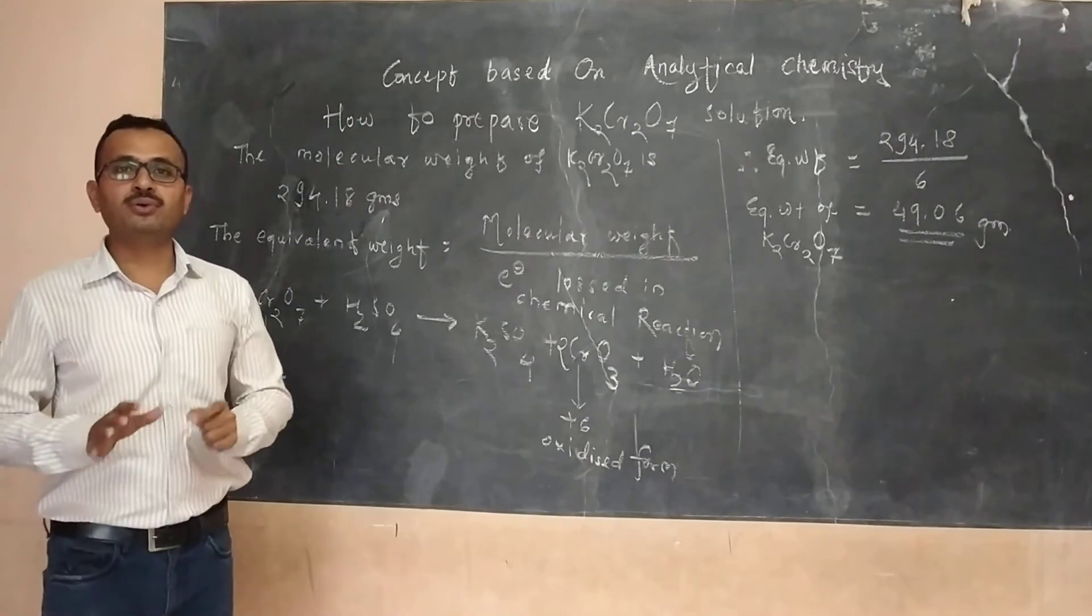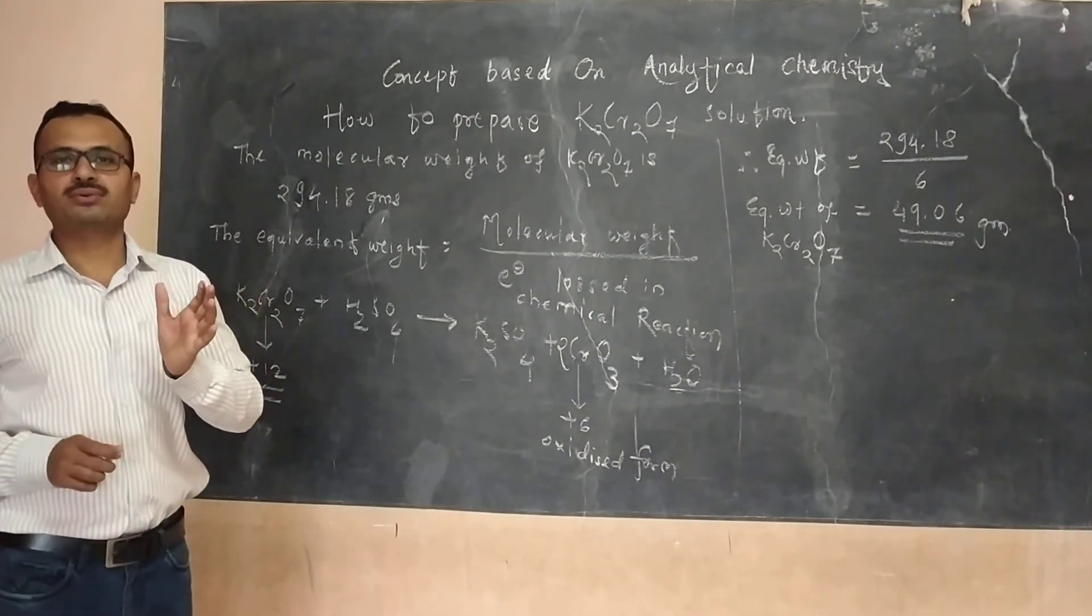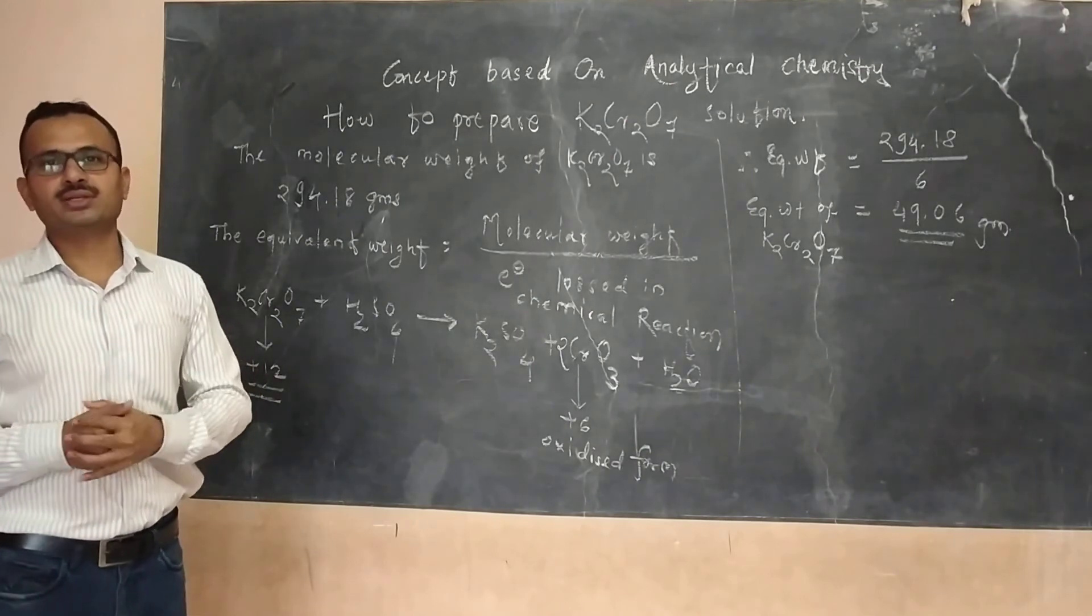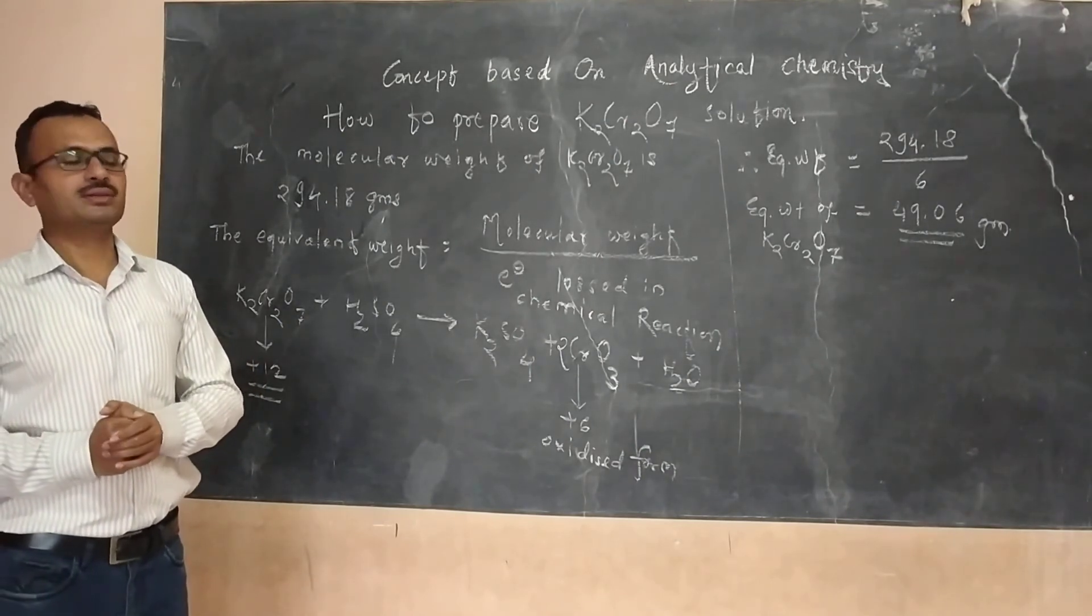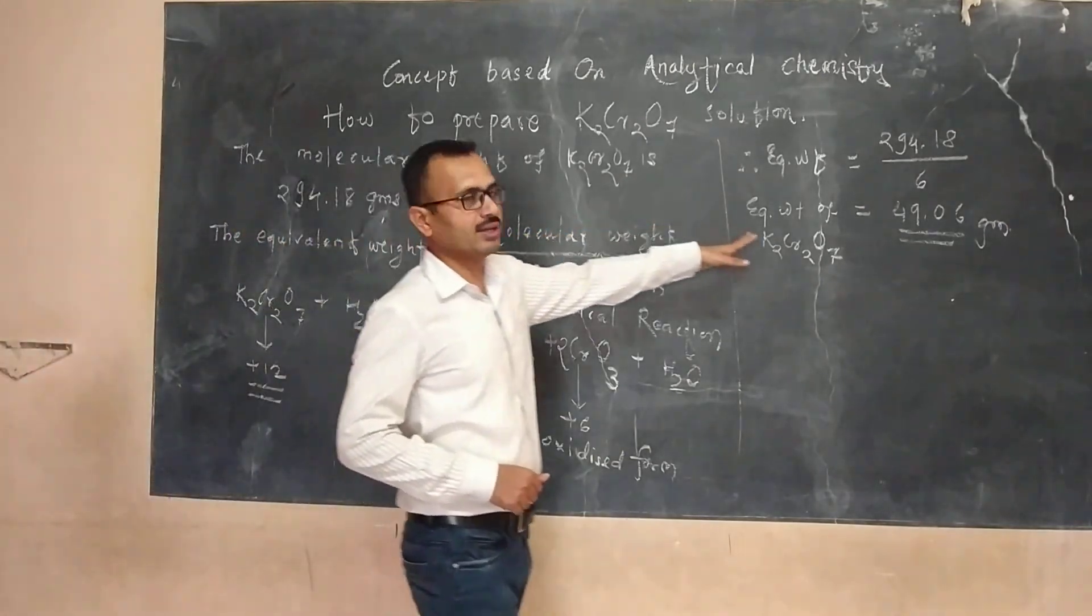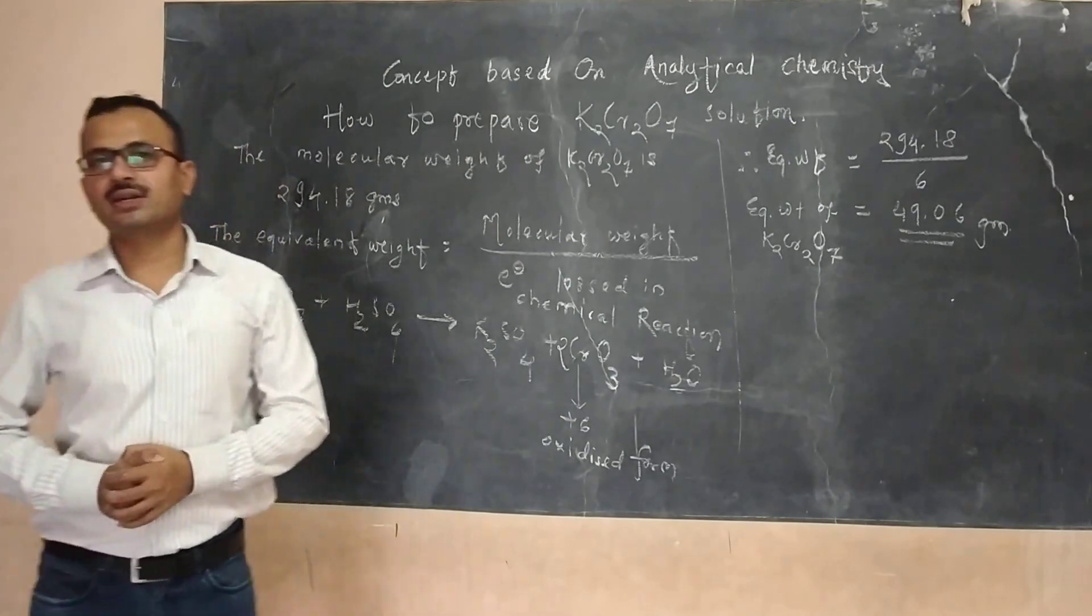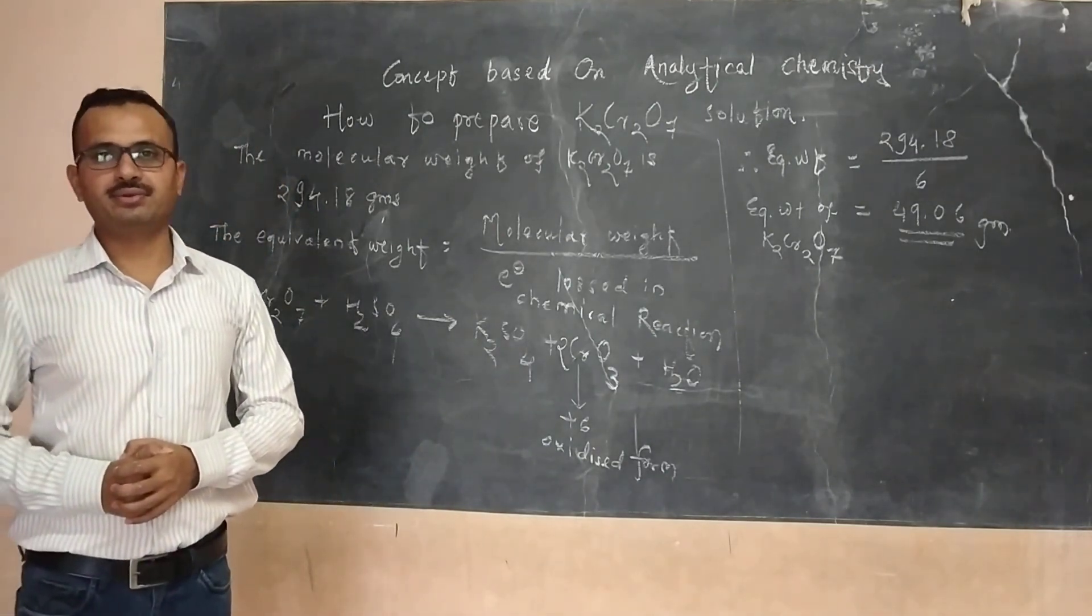So that is all about how to prepare the potassium dichromate solution with this reaction, this formula, and equivalent weight 49.06. Thank you very much. This has been the right time for this lecture. Thank you very much.